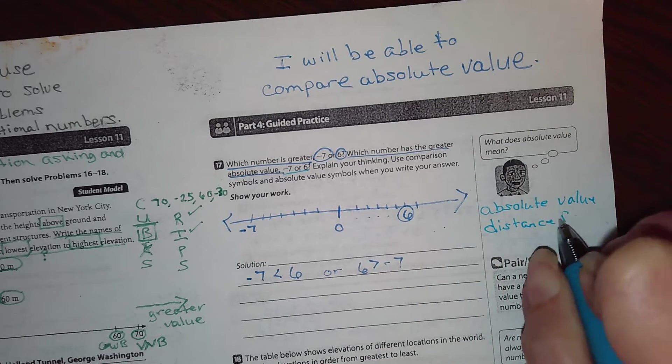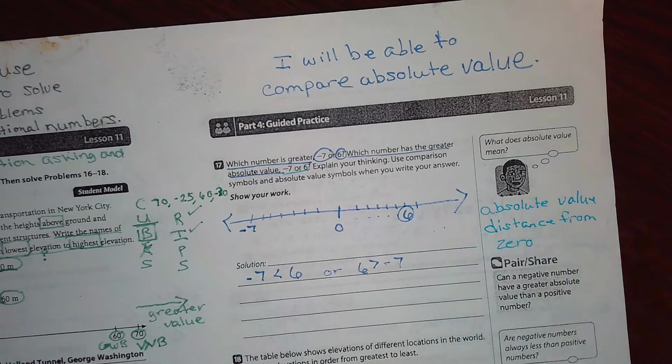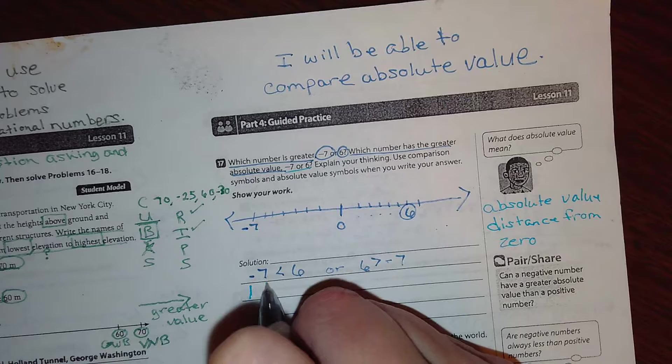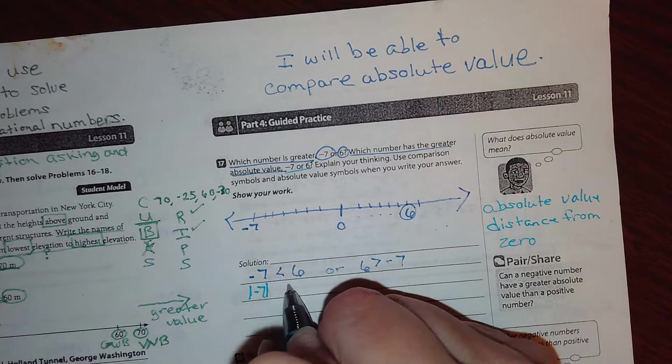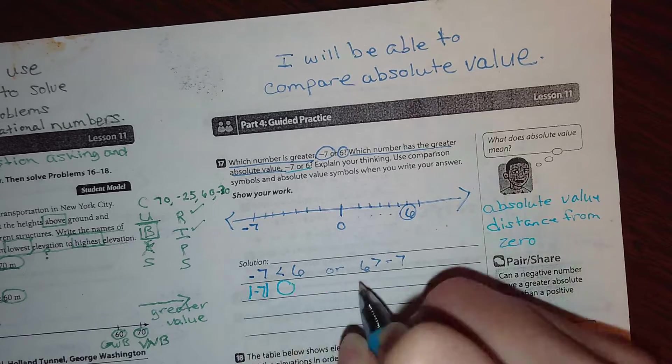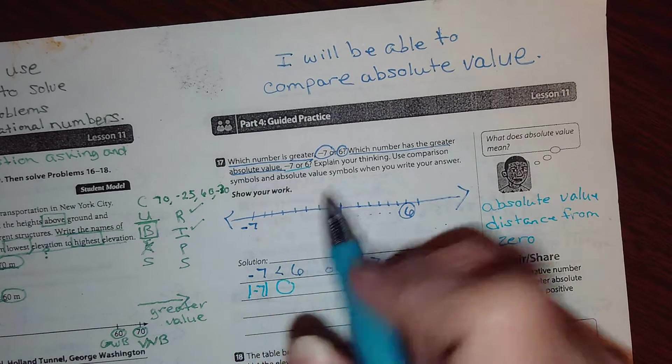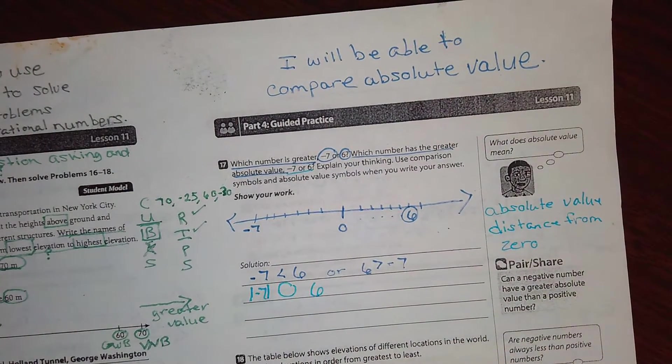is the distance from zero. Remember, it is a measurement. Okay. So I need the absolute value of negative seven. I'm going to put my little thingy here. Or six, right? Okay. And I'm looking for which one is greater.